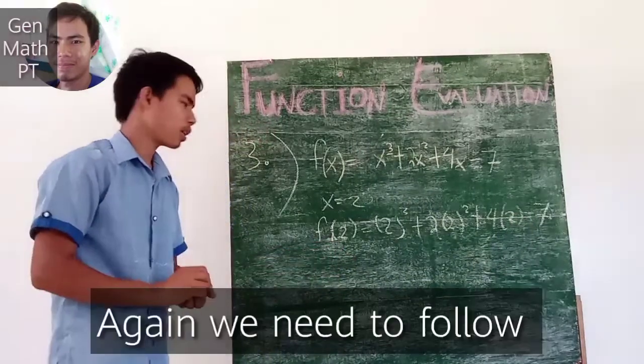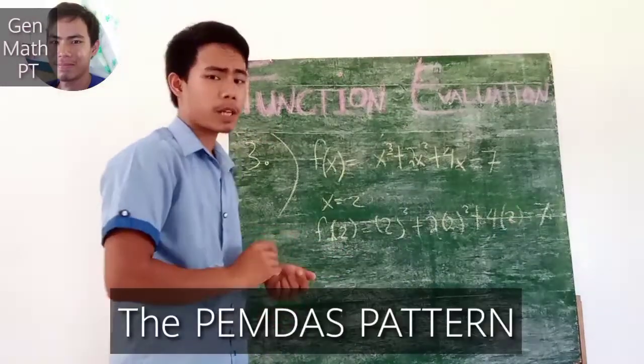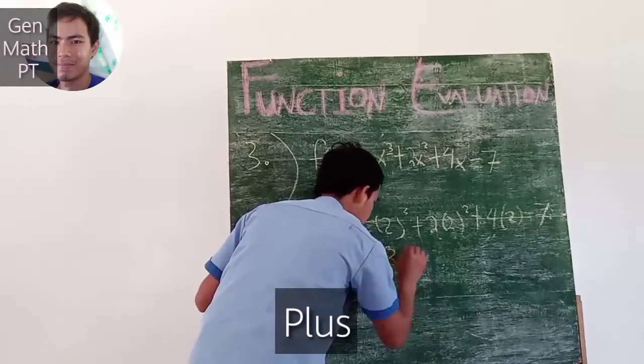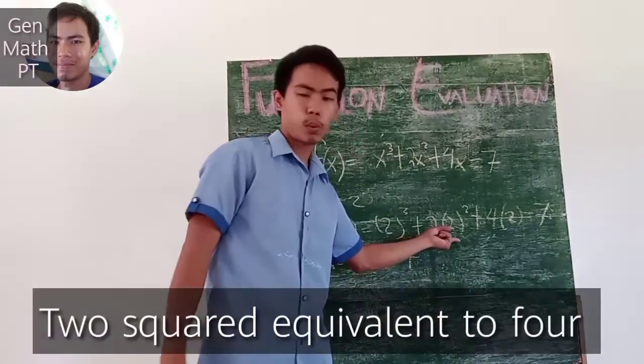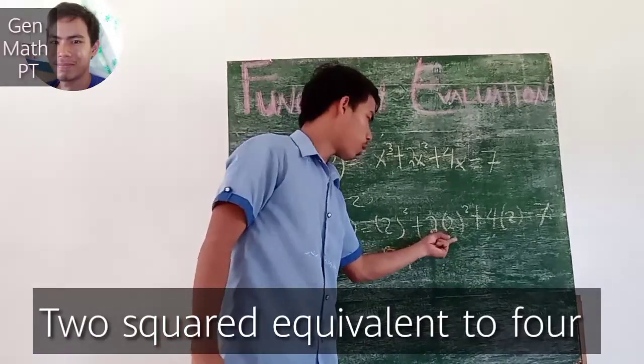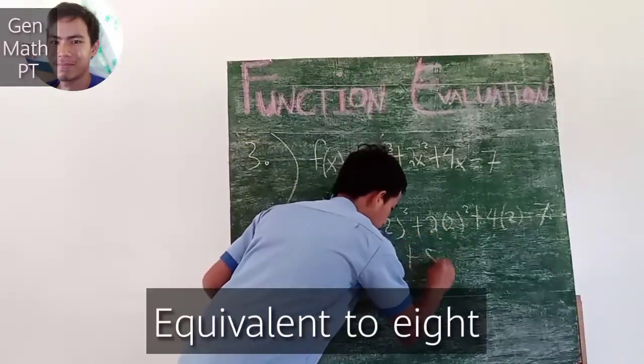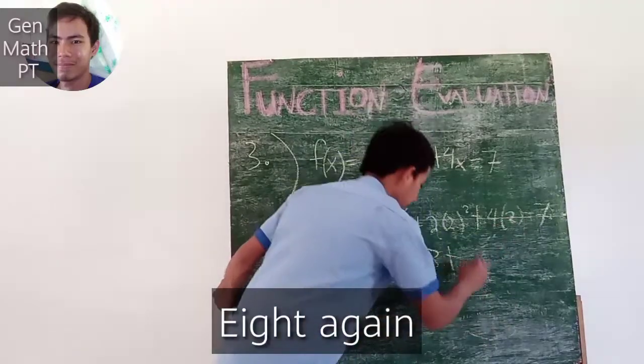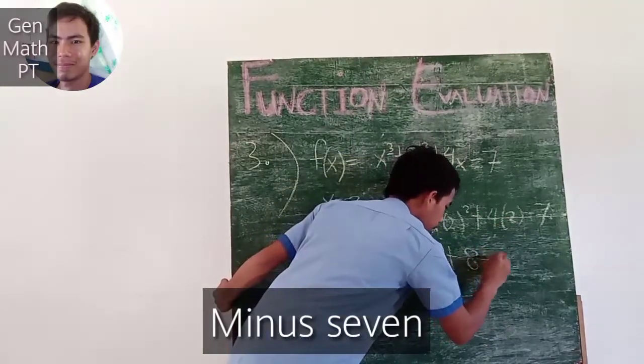In solving this, again, we need to follow the PEMDAS pattern. 2 cubed equals 8. We have 8 plus 2 squared equals 4 times 2, equivalent to 8, plus 4 times 2, which is 8 again, minus 7.